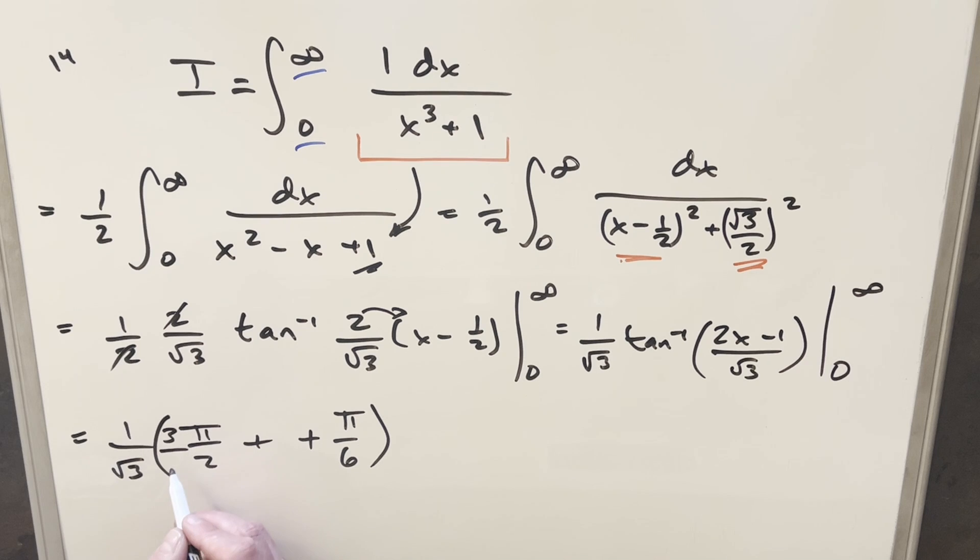Get a common denominator over here by multiplying by 3 so that this becomes 3 pi over 6 plus pi over 6 or 4 pi over 6. But then I can reduce this to 2 pi over 3. Multiplying 2 pi over 3 times 1 over square root of 3, we get our final solution of just 2 pi over 3 square root of 3.